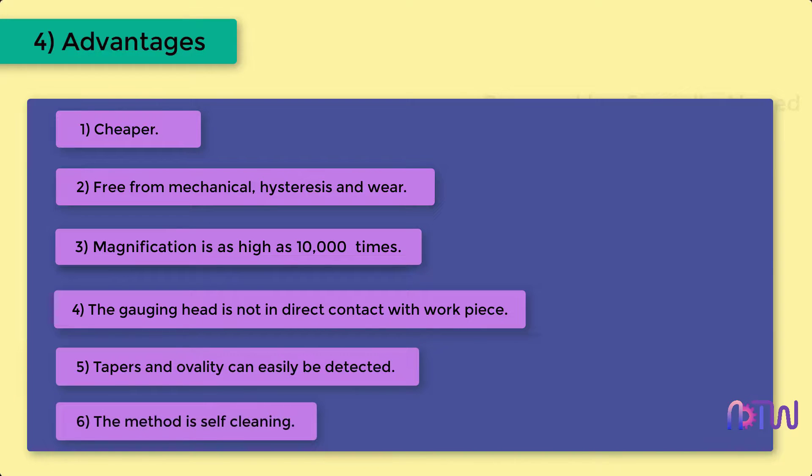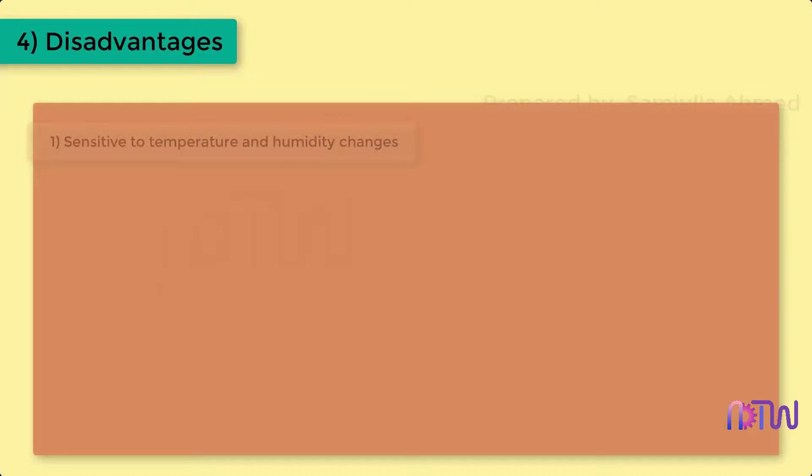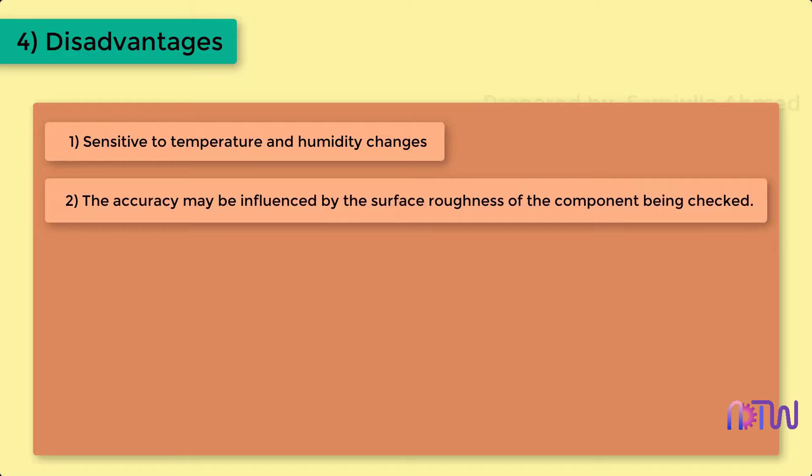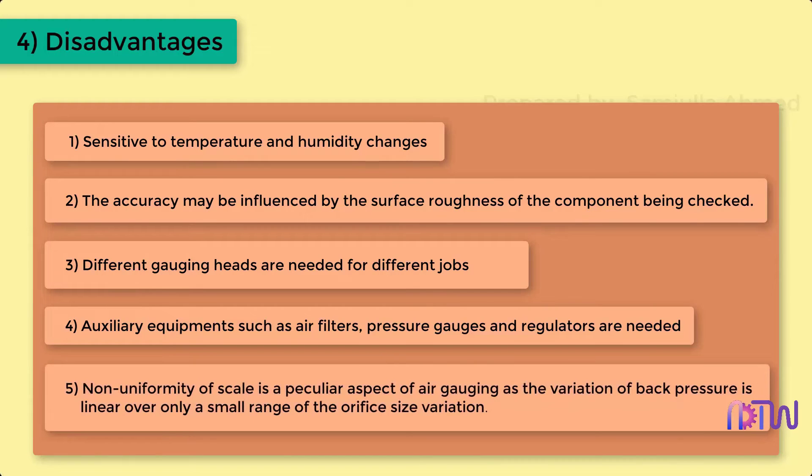Disadvantages: They are very sensitive to temperature and humidity changes. The accuracy may be influenced by the surface roughness of the component being checked. Different gauging heads are needed for different jobs. Auxiliary equipment such as air filters, pressure gauges, and regulators are needed. Non-uniformity of scale is a peculiar aspect of air gauging as the variation of back pressure is linear over only a small range of the orifice size variation.